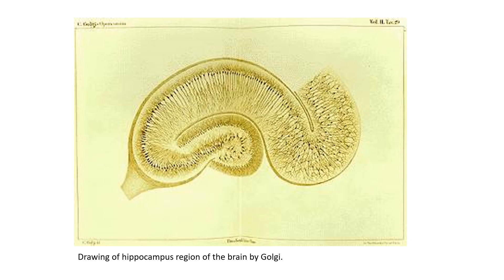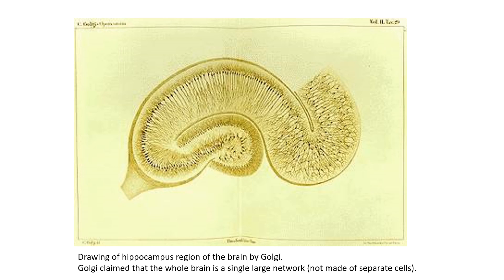The way Golgi interpreted these images was that all of it looked like a densely interconnected network with lots of fibers. He could not see distinct cells in there. So he thought maybe the brain is slightly different from other parts of the body — that the brain is basically a dense mesh or network of tissue.